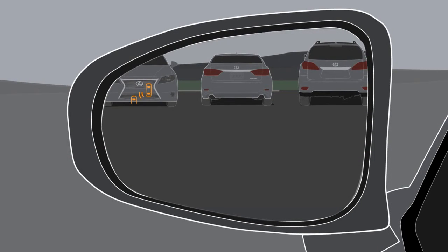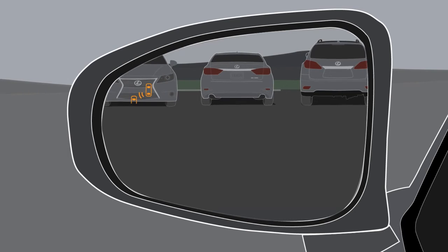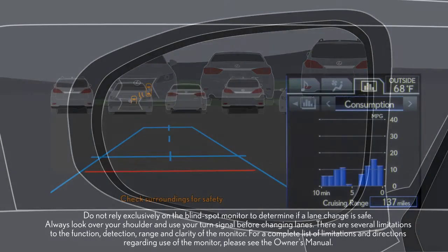If a vehicle is detected, the system will warn you of the other vehicle's presence by flashing the side mirror indicators and sounding a warning tone.